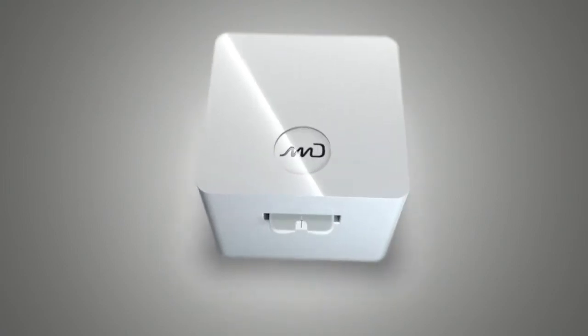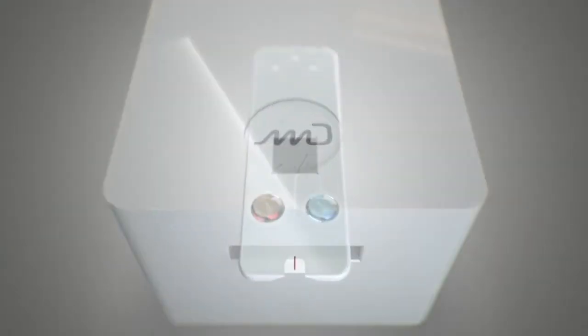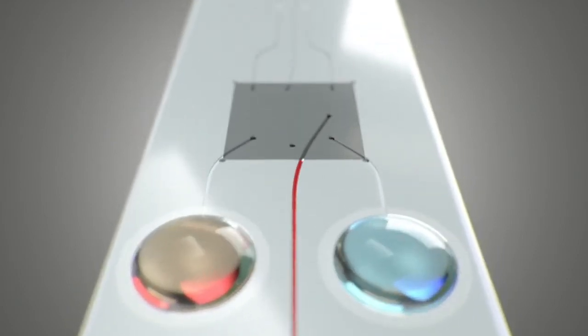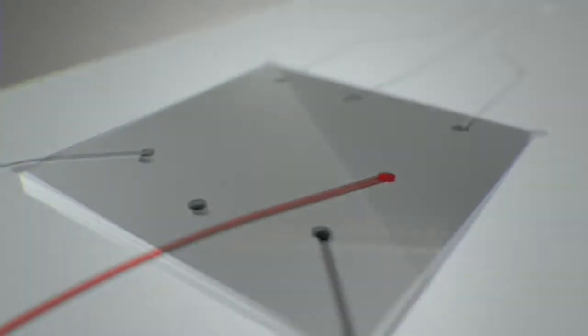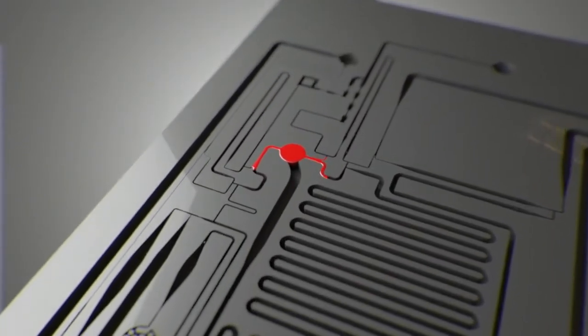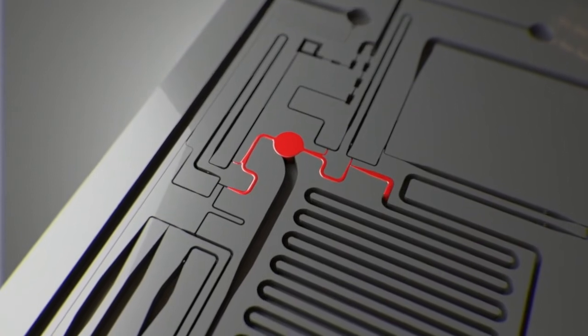The test card is inserted into a reader for testing to begin. Next, capillary forces draw the sample in the test card towards the nanofluidic processor, built out of two layers of silicon, allowing the blood to be distributed throughout a network of precisely engineered microchannels.